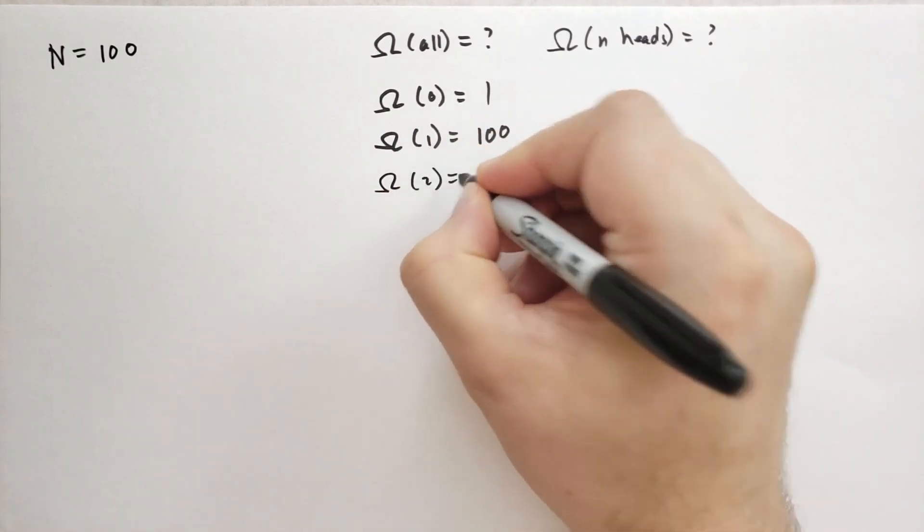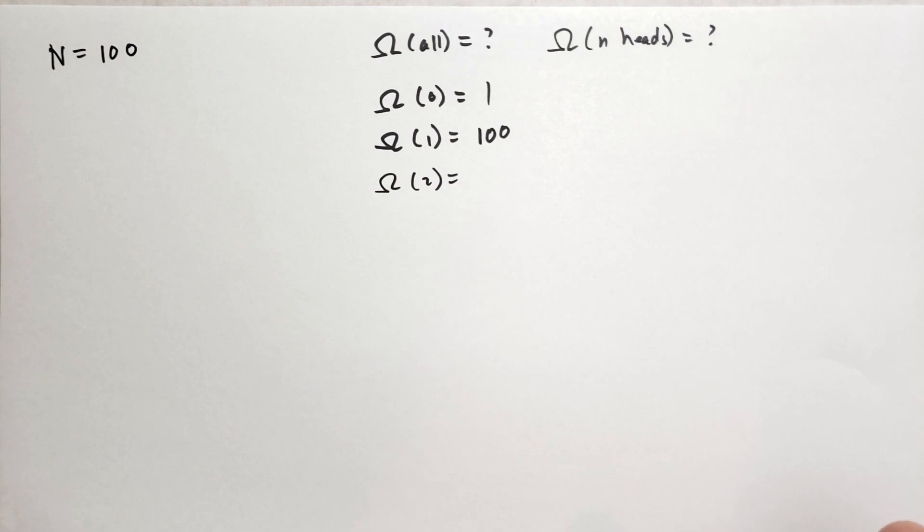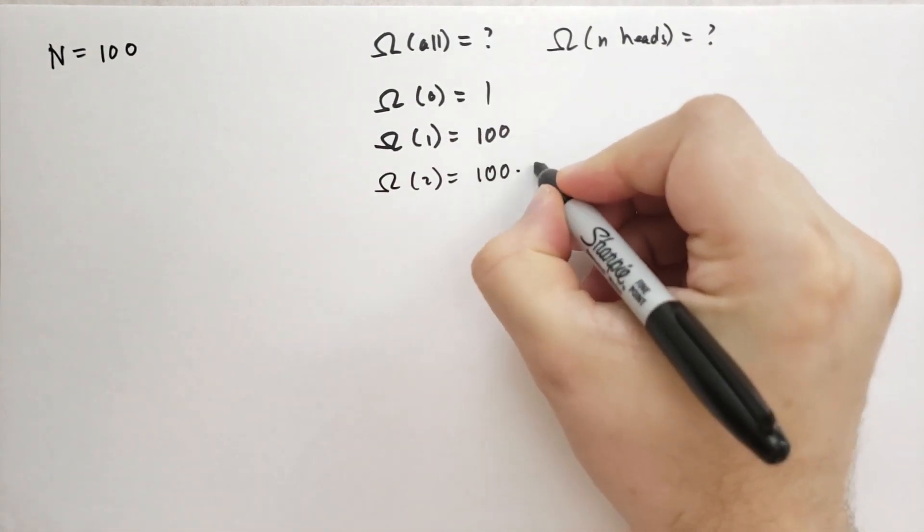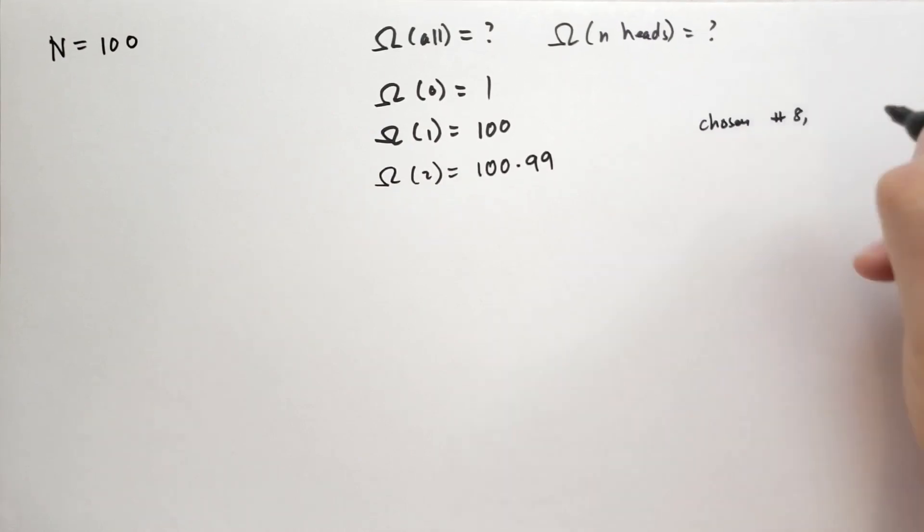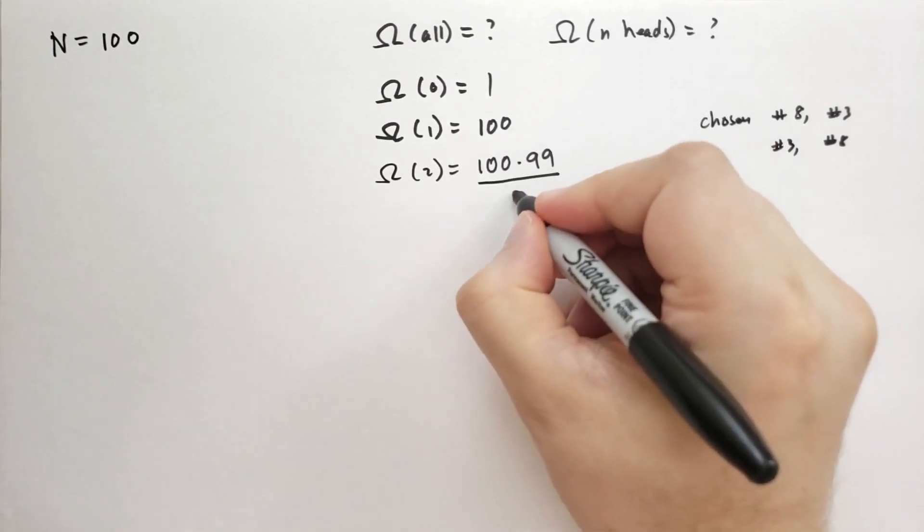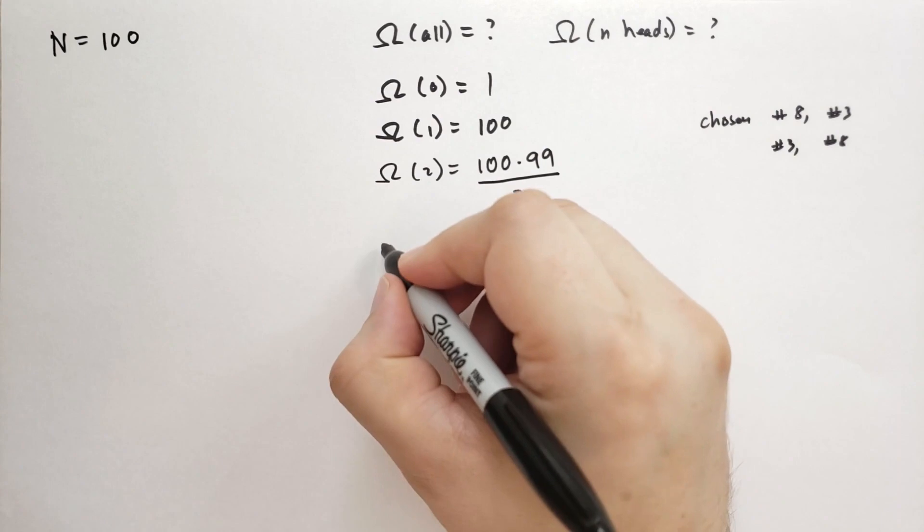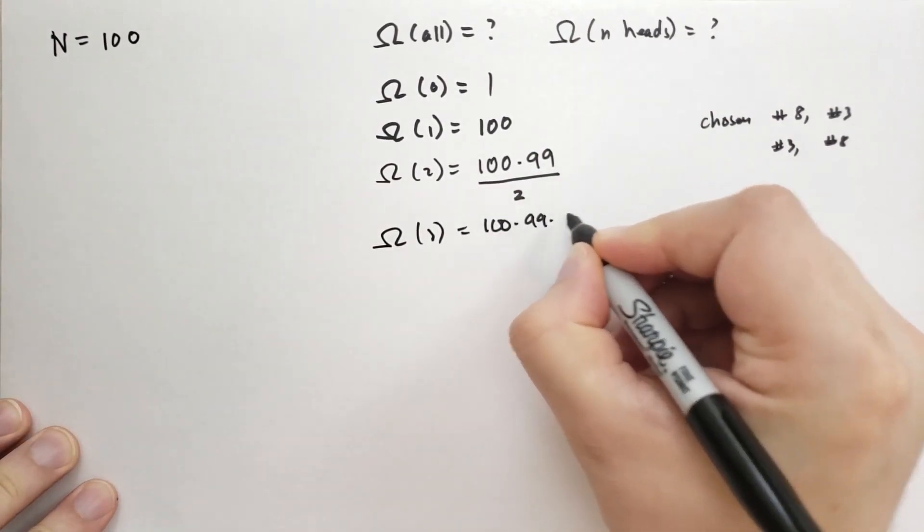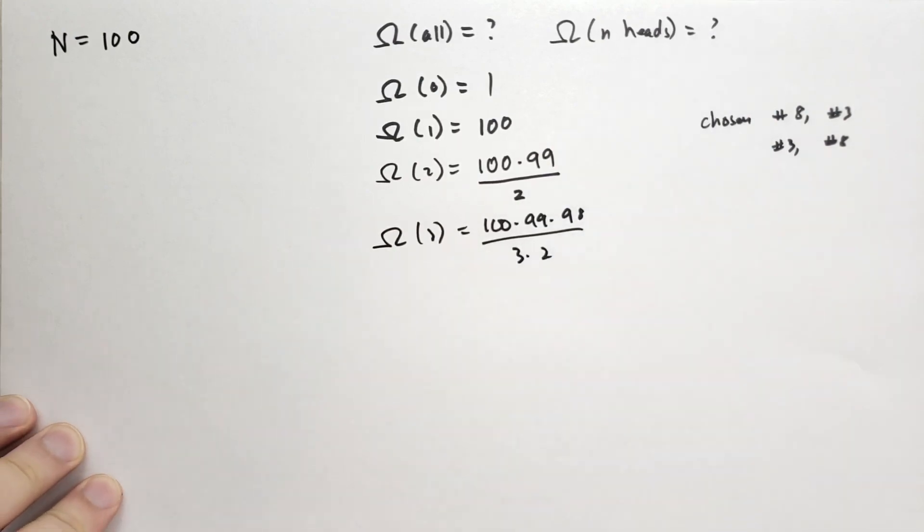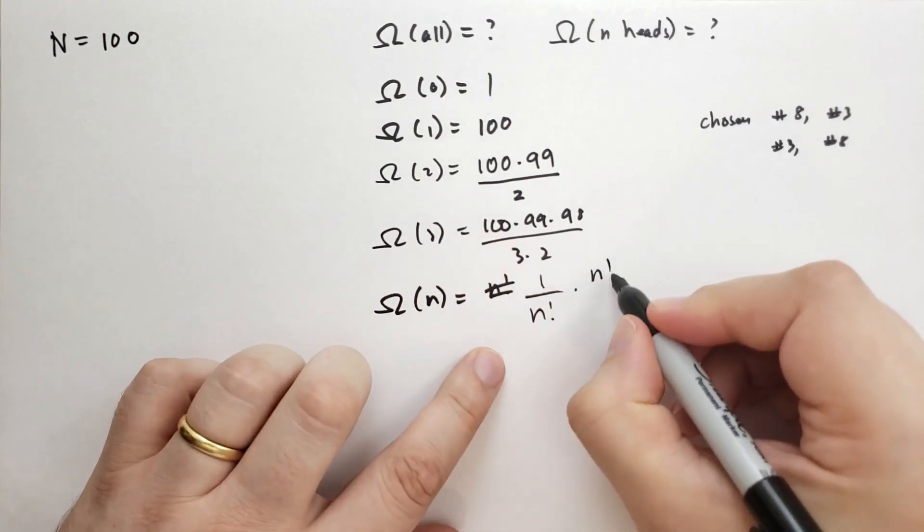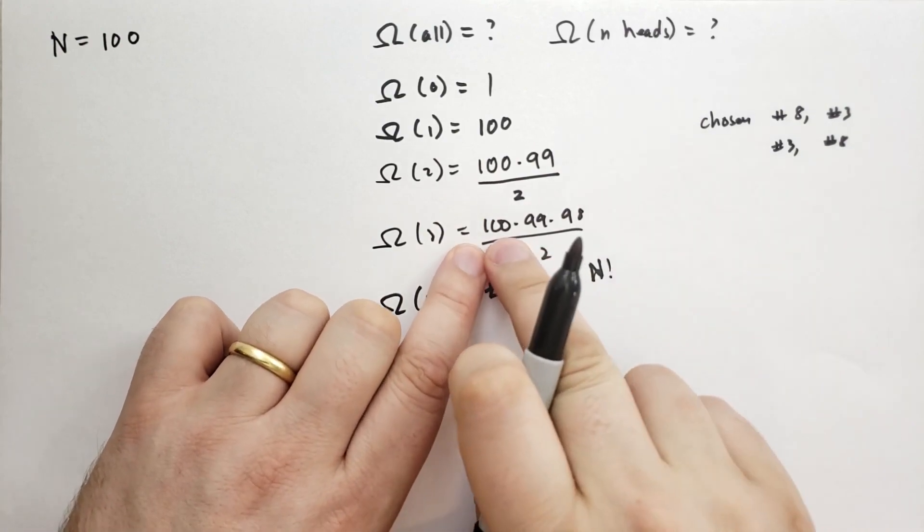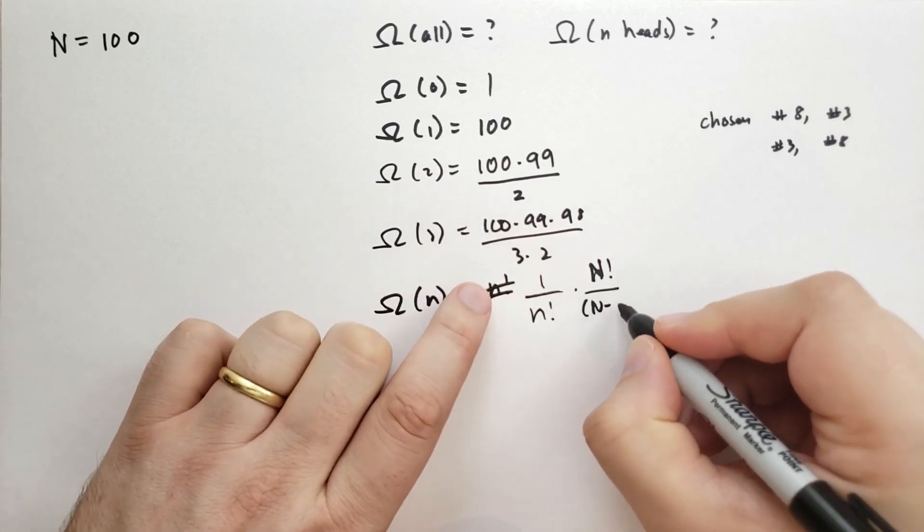What if we have omega of 2? Well, in this case, we have 100 choices for the first coin, and then we have 99 choices for the second coin. But we have to keep in mind that the first coin that we choose could be the second coin for another first coin that we choose. For instance, I could have chosen number 8 and then number 3. Or I could have chosen number 3 and then number 8. So I don't want to count those twice, so I divide by 2. And indeed, if you play around with this, you're going to see that omega 3 is going to be 100 times 99 times 98 divided by 3 times 2.